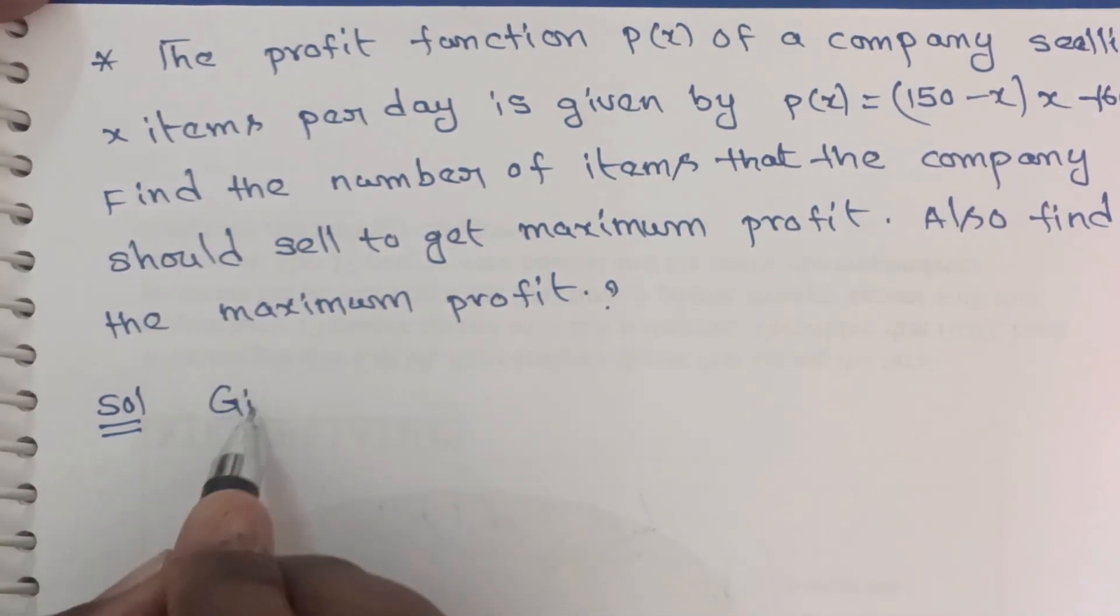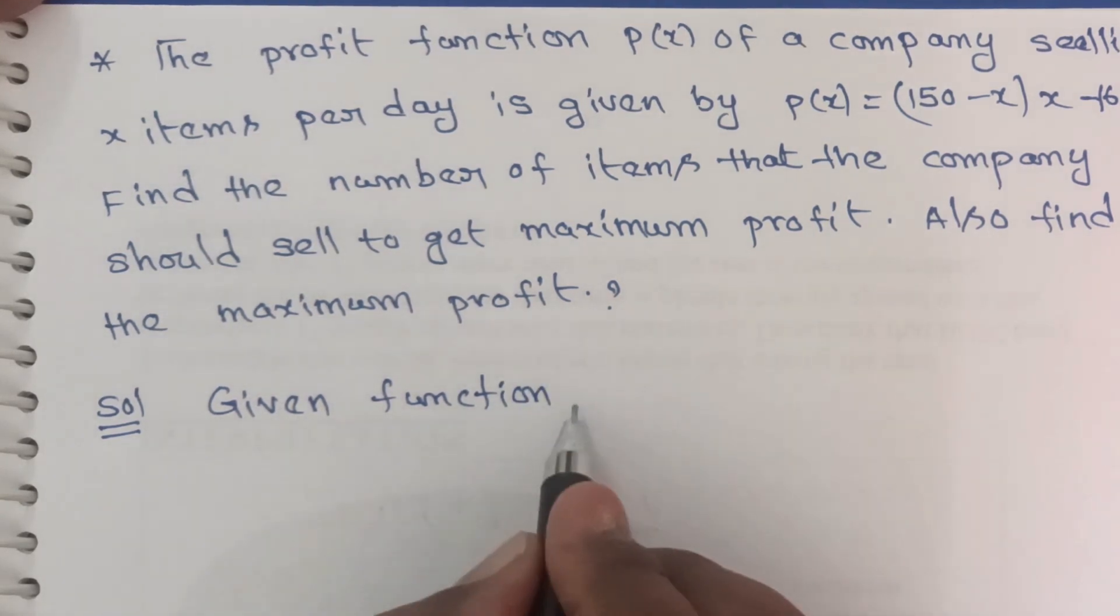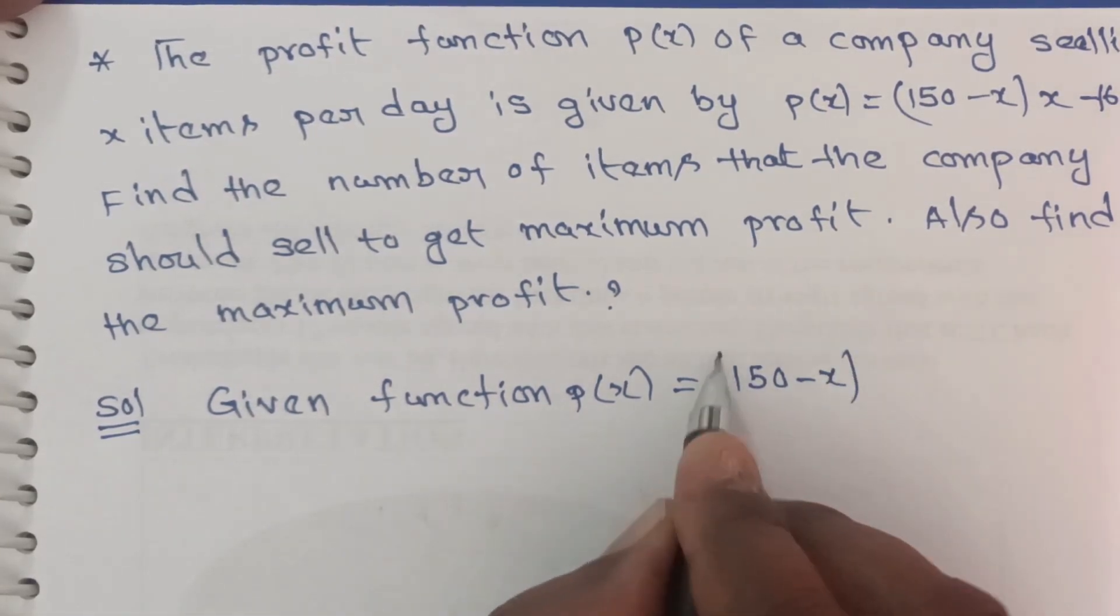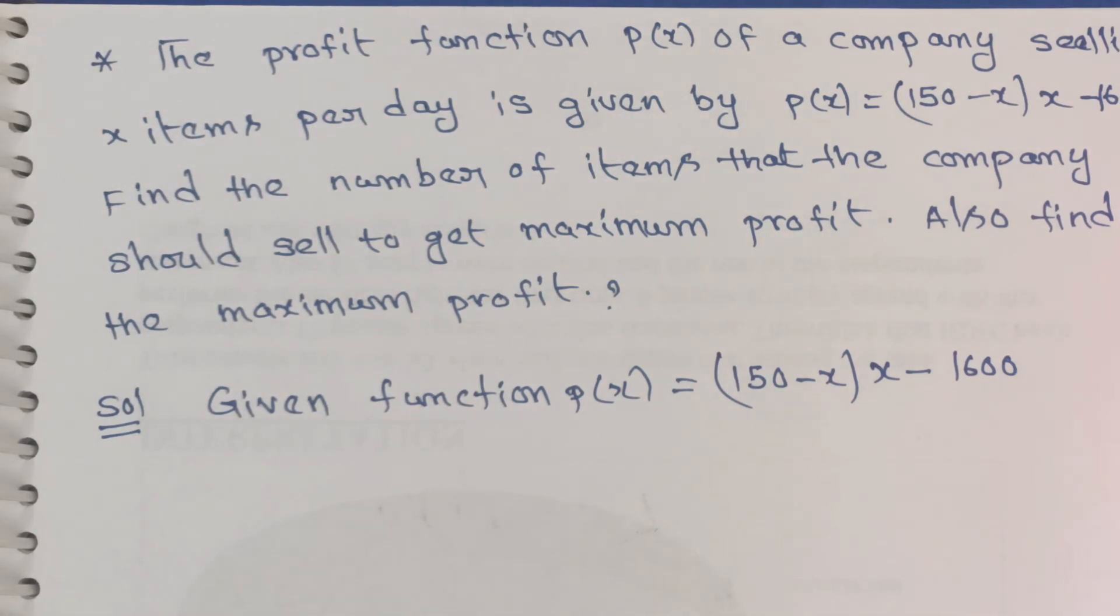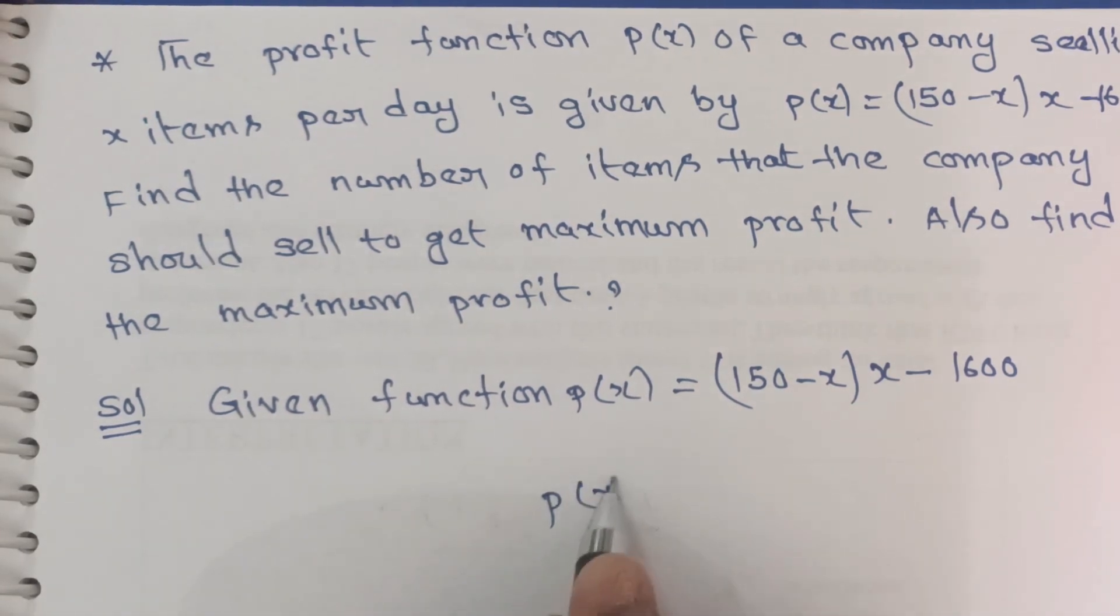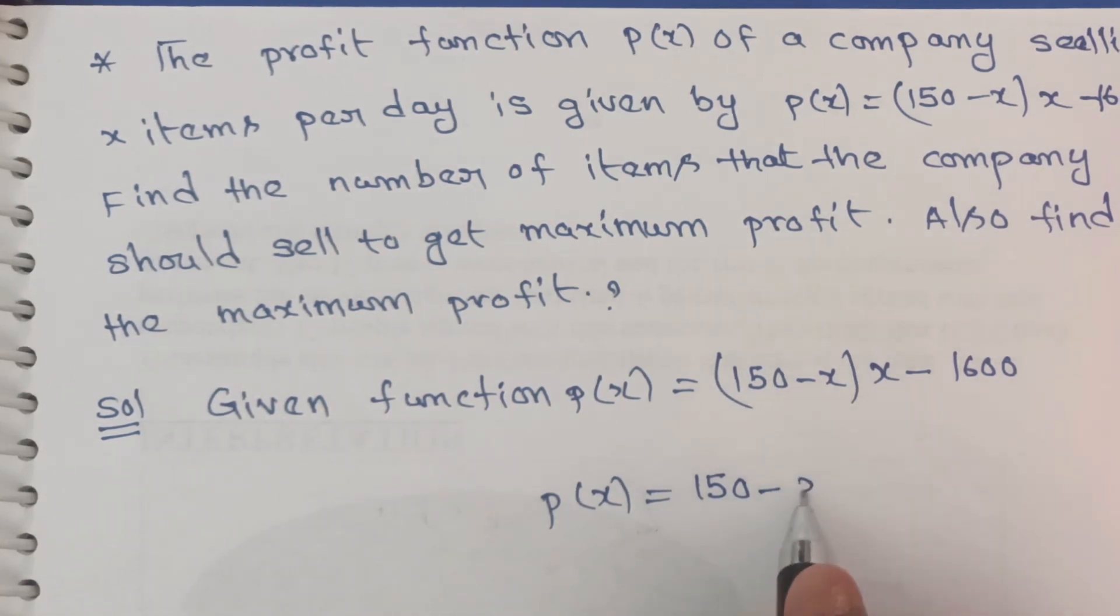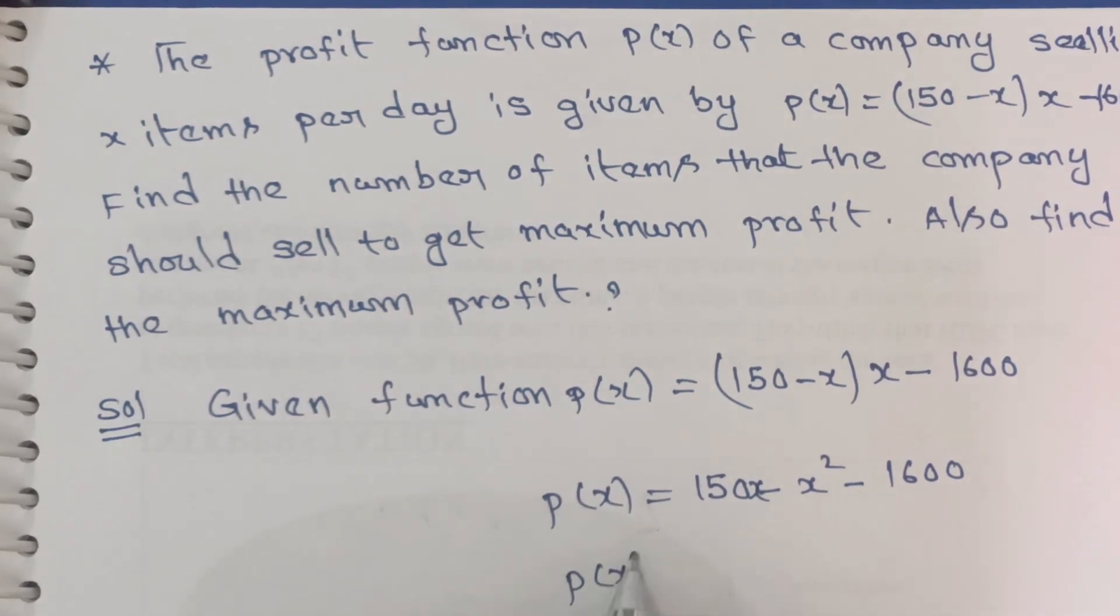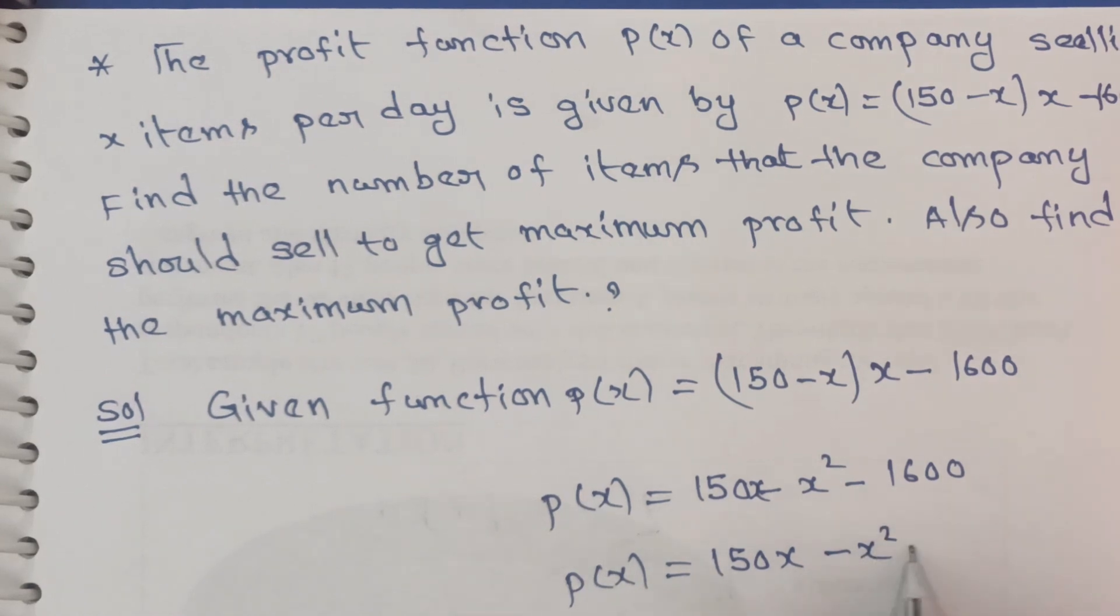Given the profit function: p(x) = (150-x) × x - 1600. Writing this out, p(x) = 150x - x² - 1600.